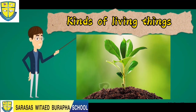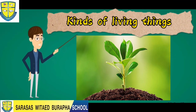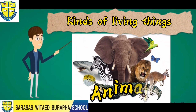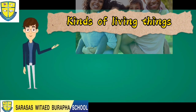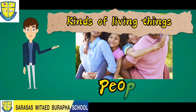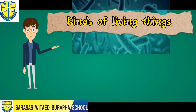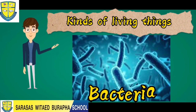Our first kind of living things are plants. Next on the list is animals. We also have people. And even bacteria is a living thing.